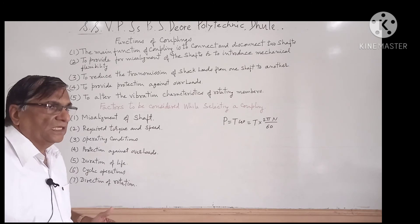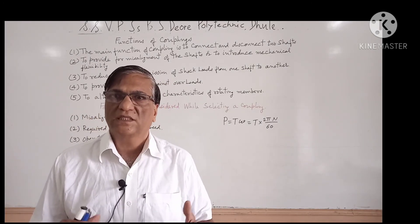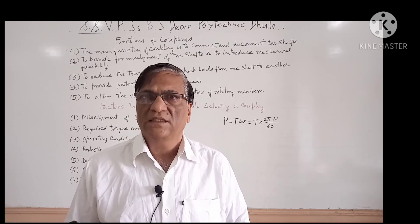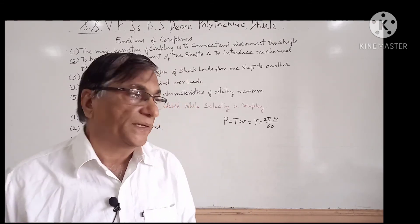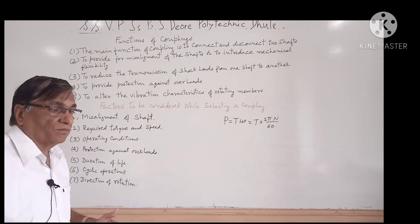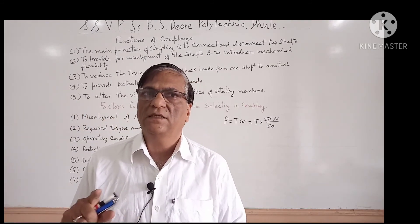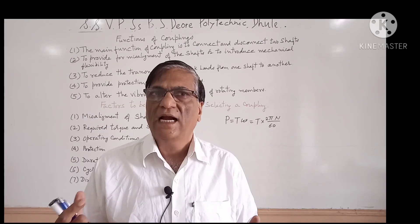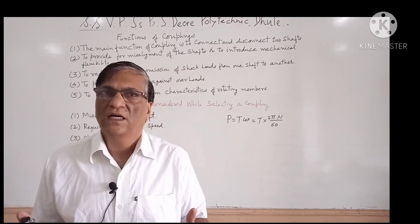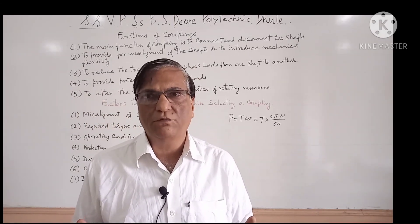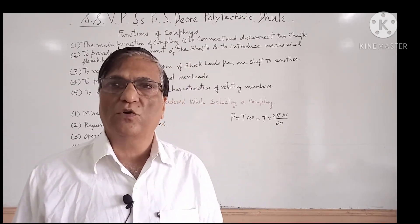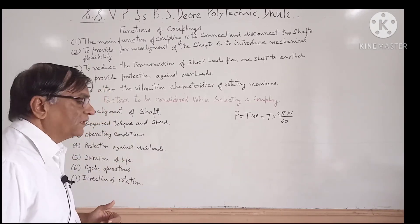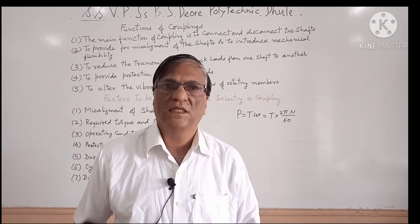Next, cyclic operations: if the coupling is subjected to steady load, a different type of coupling is selected. If it is subjected to cyclic loading, we select a different type of coupling. Next is direction of rotation: if unidirectional rotation is there, we use a different type of coupling; if anticlockwise or reversing rotation is required, we select a different type. So selection of coupling depends upon the direction of rotation. This concludes the functions of coupling and the selection of coupling.